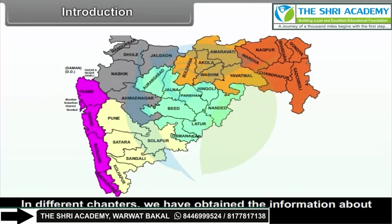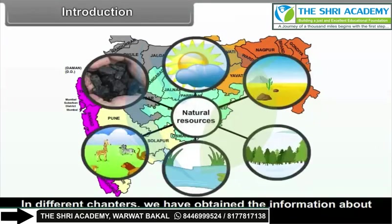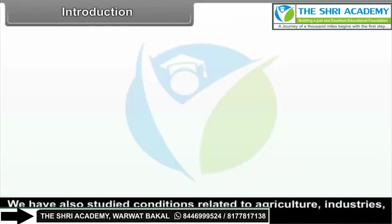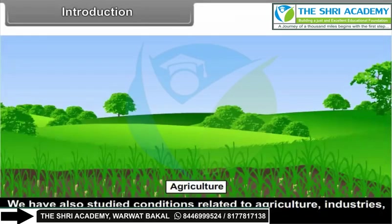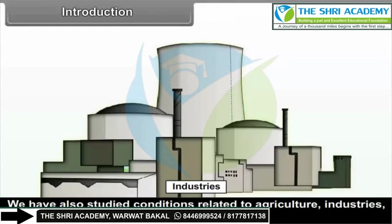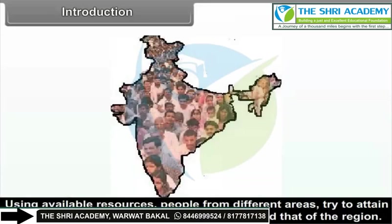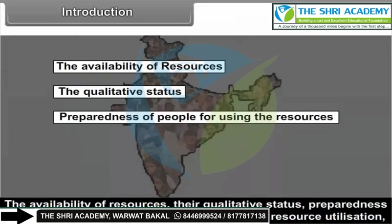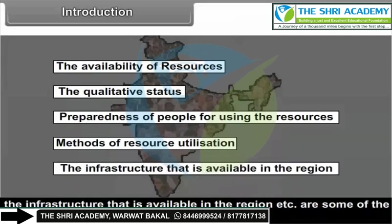In different chapters, we have obtained information about natural resources of Maharashtra, their distribution and utilization in different parts of the state. We have also studied conditions related to agriculture, industries, population, etc. in the state. Using available resources, people from different areas try to attain development of individuals, the society and that of the region. The availability of resources, their qualitative status, preparedness of people for using the resources, methods of resource utilization, and the infrastructure available in the region are some of the factors on which development depends.